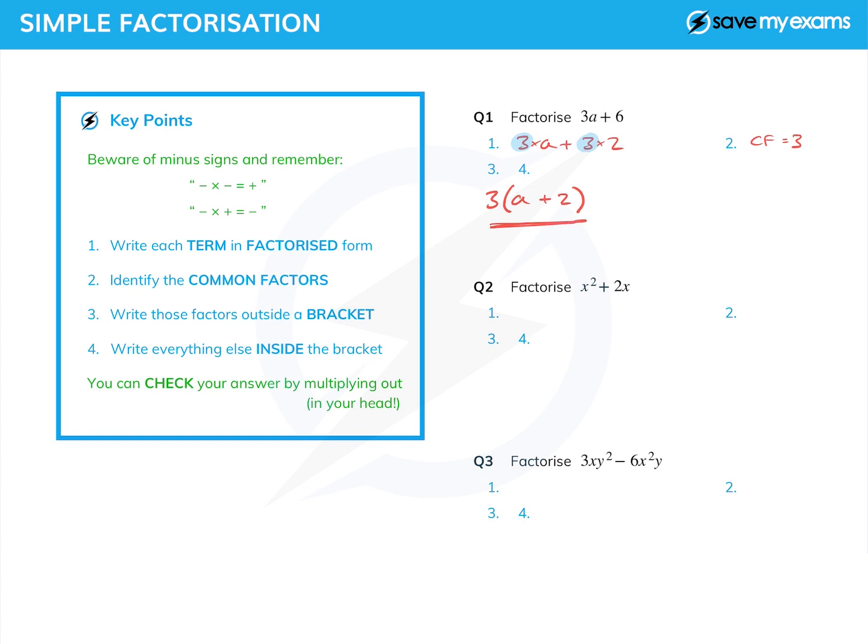Now I'm spelling out all these steps, and hopefully you'll be able to do these in your head before too long. So what about question 2? The first term is x², and the second term is 2x. I'm going to write each of those in factorized form as something times something. So x² is x times x, and 2x is 2 times x.